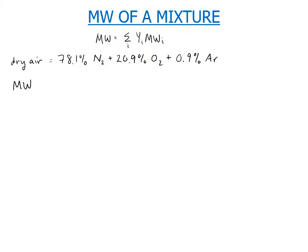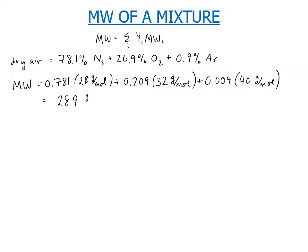The molecular weight of this mixture then is 0.781 times the molecular weight of nitrogen, which is 28 grams per mole, plus 0.209 times the molecular weight of oxygen, which is 32 grams per mole, plus 0.009 times the molecular weight of argon, which is 40 grams per mole. This is 28.9 grams per mole.